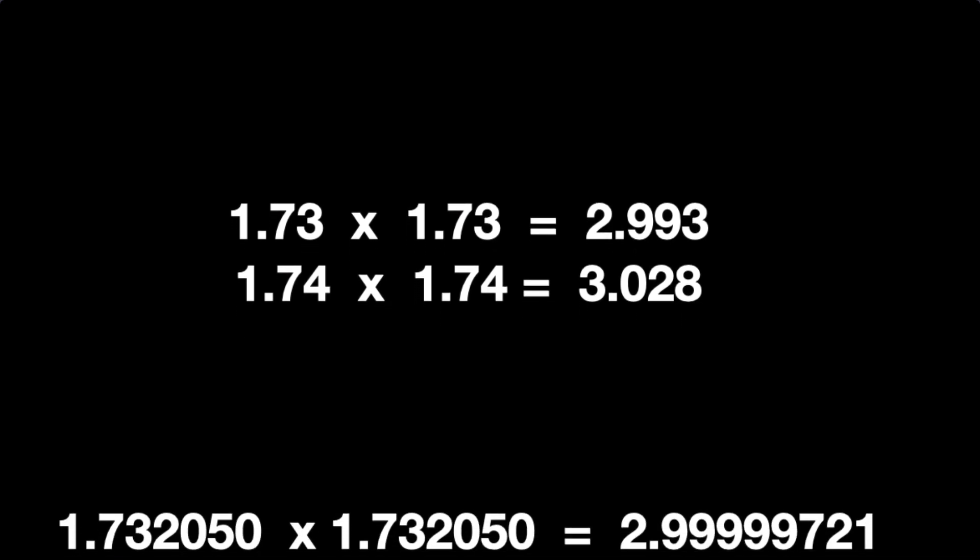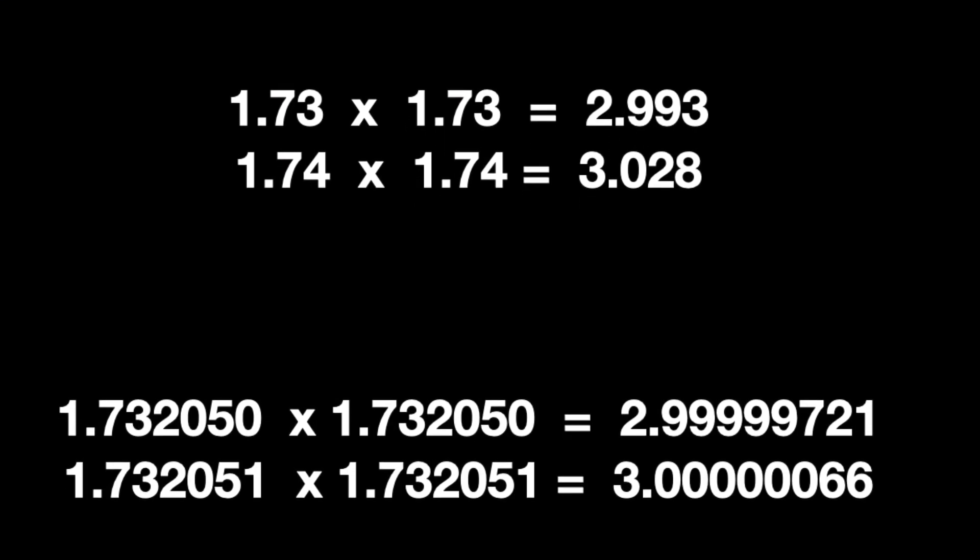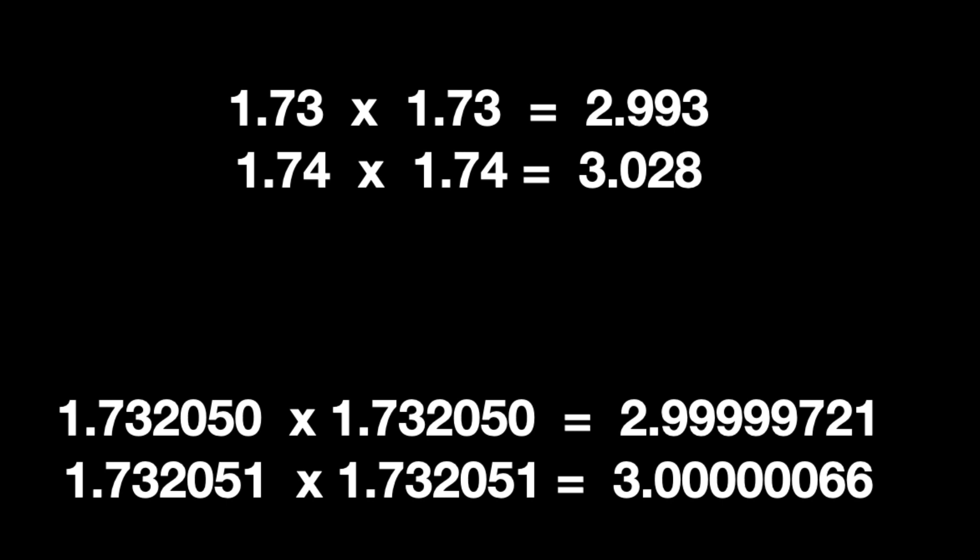Trying to get closer, we find it must be between 1.732050 and 1.732051. But no matter how many decimals we try, you never find a number which, when multiplied by itself, gives exactly three.